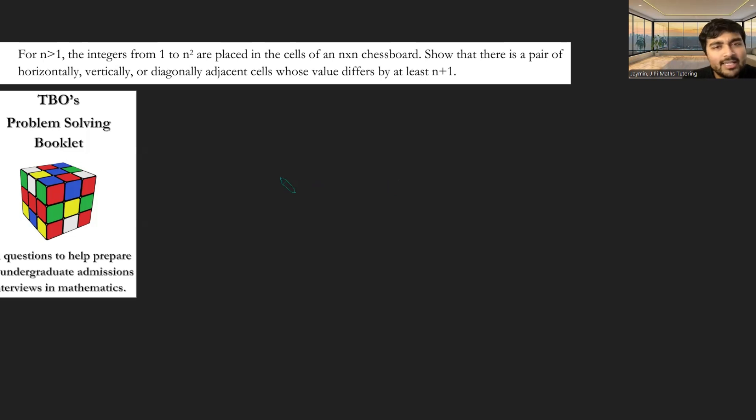So n is bigger than 1, let's start with the easiest integer, n is 2. So we're drawing a 2×2 chessboard, or a 2×2 grid, and we're putting the numbers 1, 2, 3 and 4 in there.